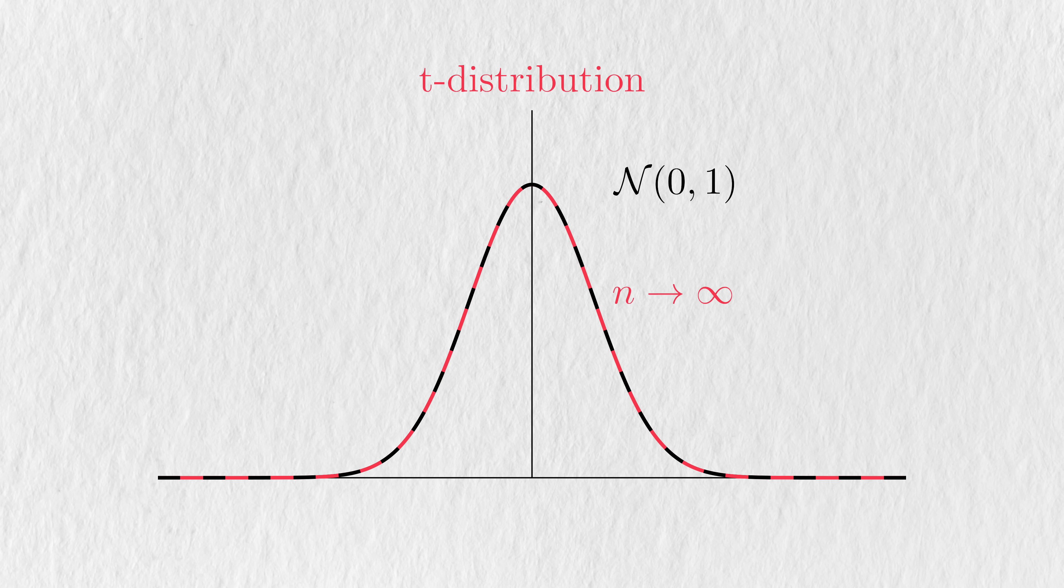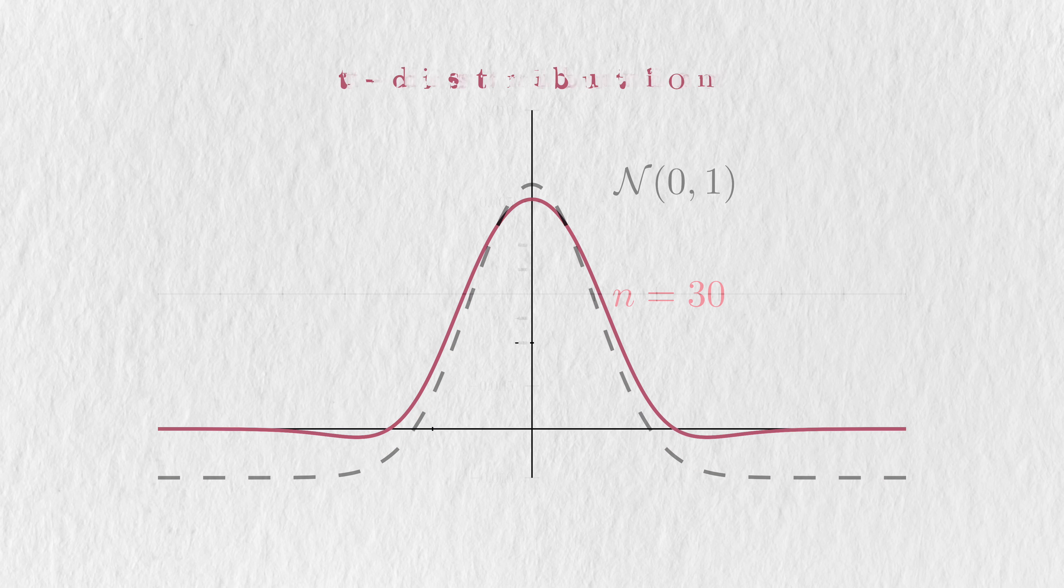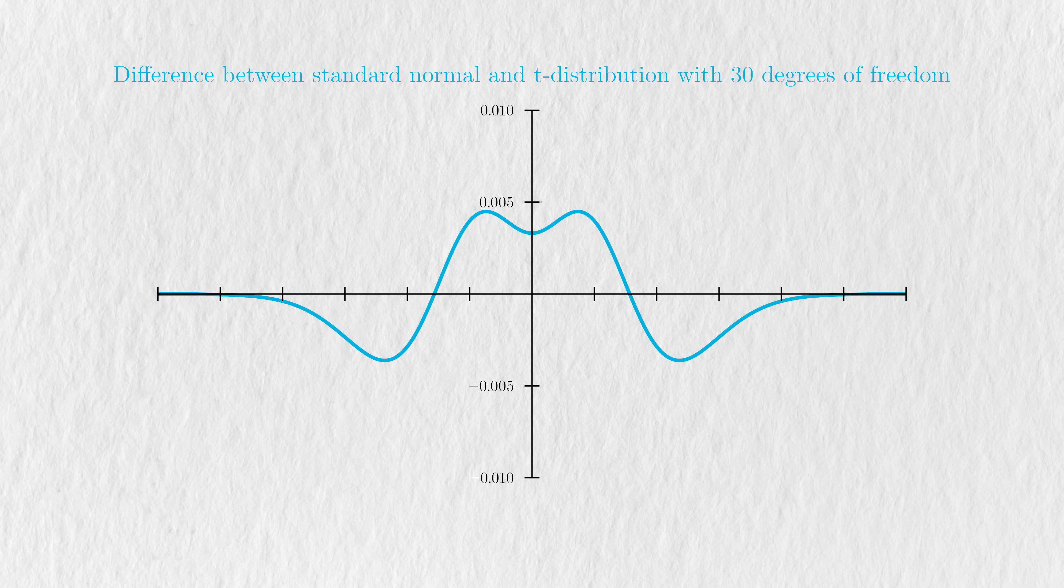Infinite samples are unrealistic. If we were to draw a line somewhere at, say, 30, then we'd have an attainable sample size while keeping a close approximation. We can see this better if we take the difference between these two functions and see that the worst deviations in the density are less than 0.005. The standard normal is higher in the center, while the t-distribution is higher in the tails, like we'd expect.